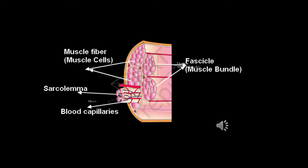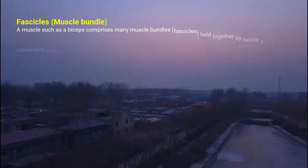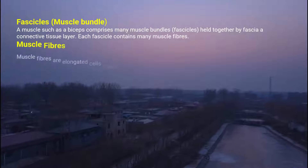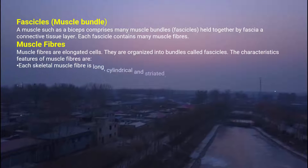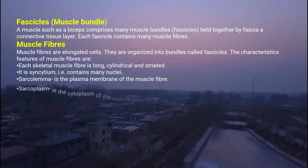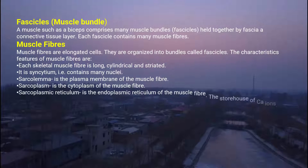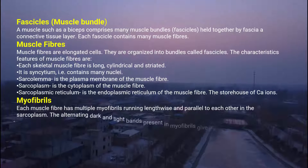See the diagrammatic structure of a muscle. This diagram shows the organization of a muscle, exposing the muscle bundle, muscle fibers, sarcolemma, and blood supply. A muscle such as the biceps comprises many muscle bundles or fascicles held together by fascia, a connective tissue layer. Each fascicle contains many muscle fibers.